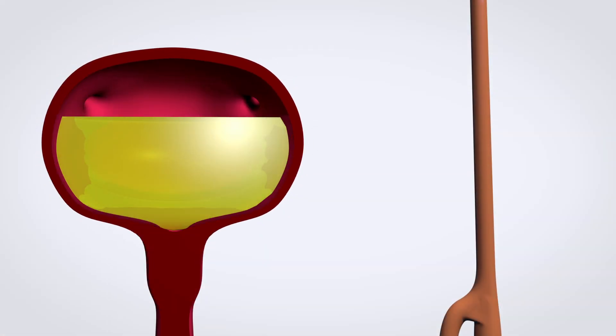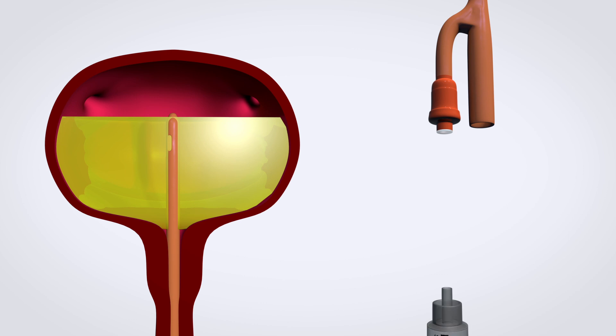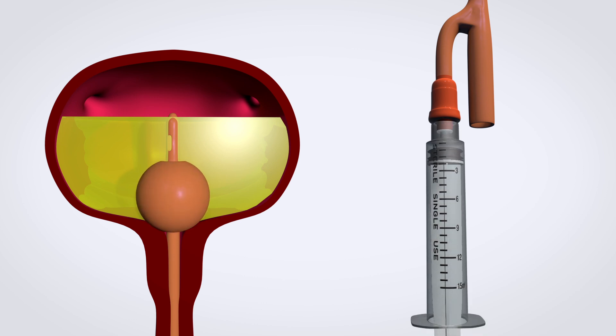The Foley catheter is inserted into the urethra and the balloon is activated through a side channel by a sterile syringe containing an ampoule of water.